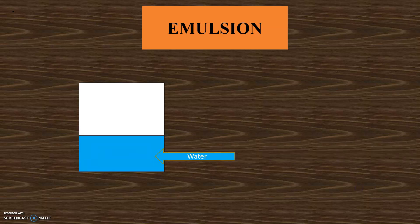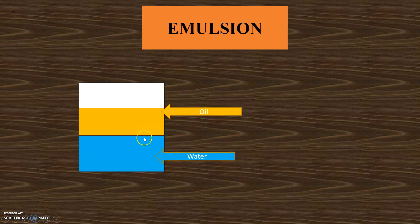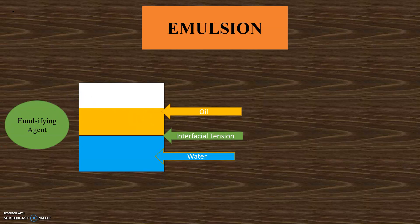As we know, in an emulsion preparation there are two immiscible liquids — one is water and the other is oil. We can see here the point where the oil ends and the aqueous phase, that is water, starts. This point is known as interfacial tension. So, to prepare an emulsion, we have to use an emulsifying agent.